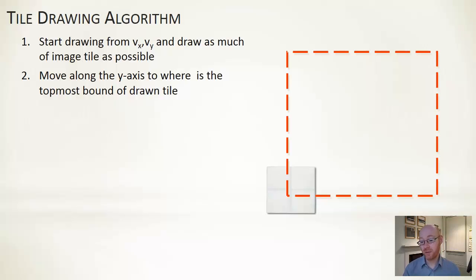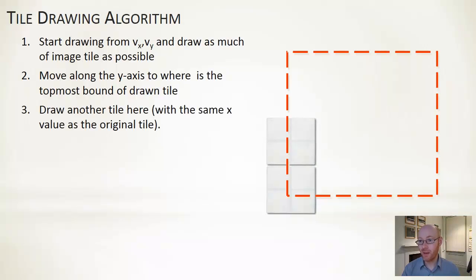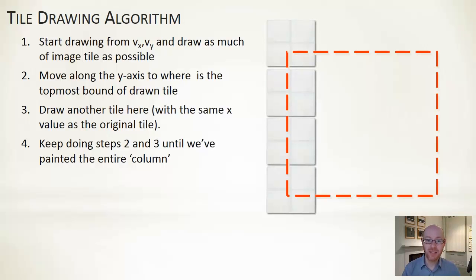Now we've got a choice: do we tile along the x first or tile along the y? Here we're going to tile along the y first. So we move up the y-axis to the point where we've finished drawing that first tile, and we're going to draw another tile there. We've already calculated the x location, it's going to be our same starting one, so we'll use that.